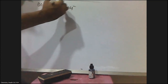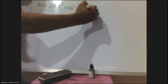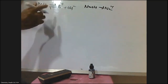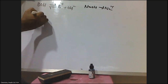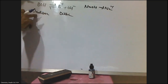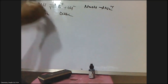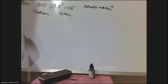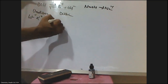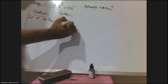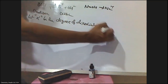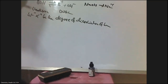For strong bases there is no equilibrium — the reaction goes only in the forward direction. But for weak bases and weak acids, there exists an equilibrium between the undissociated form and the dissociated form. Let alpha (α) be the degree of dissociation of the base.